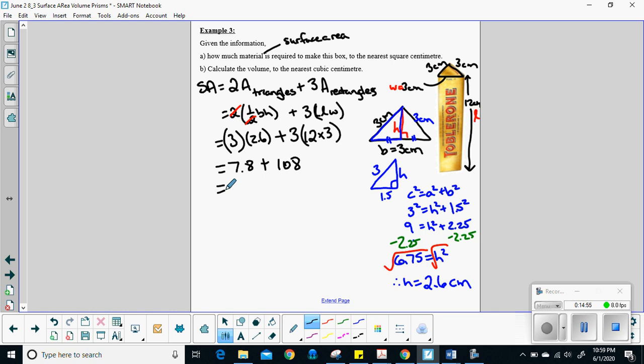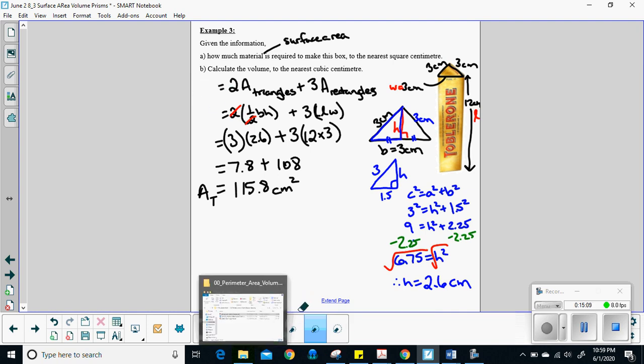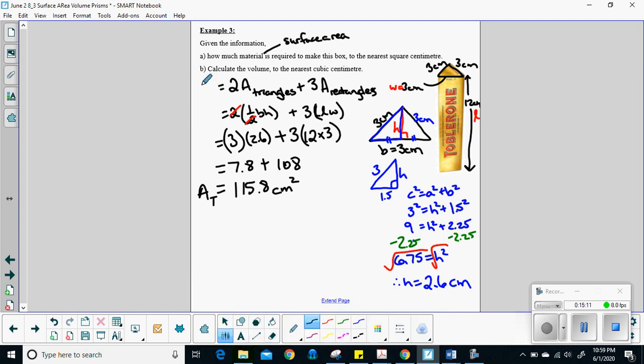Last but not least, add the two things together, and you get a total surface area of 115.8 centimeters squared. Centimeters squared, because we're talking about an area here. Area total, maybe I should have stuck with area total, because that's what your formula sheet says. Good. All right.